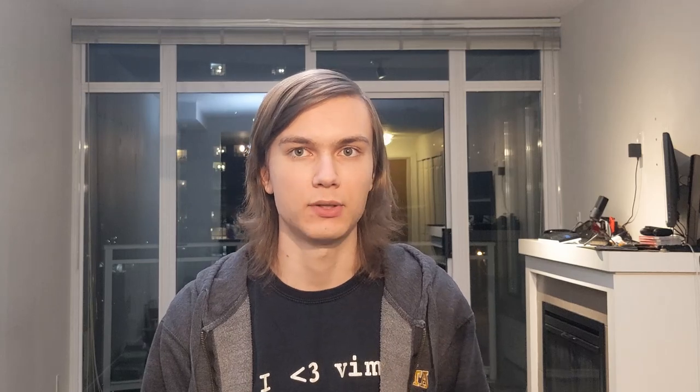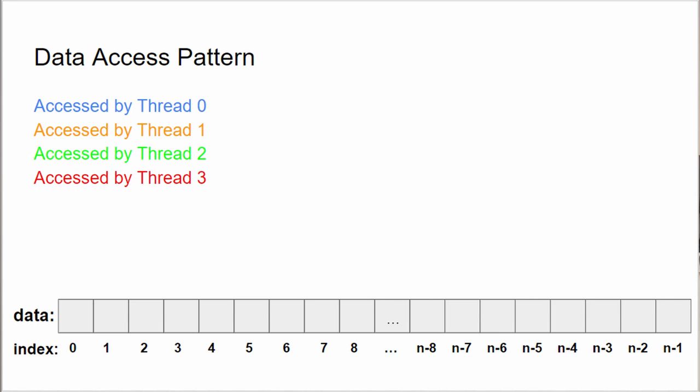Let's look at the worst case example. Each thread starts execution at the exact same time and thread 0 writes a 0 to data[0], which invalidates the cache entry in all the other cores.